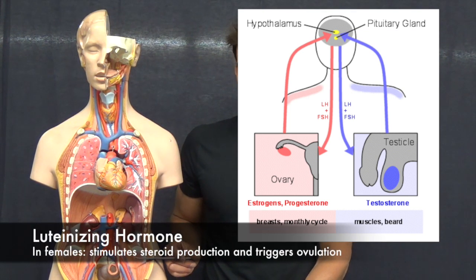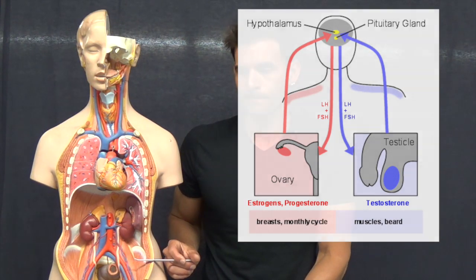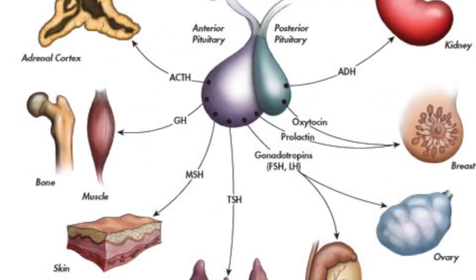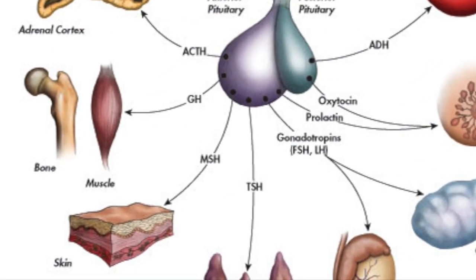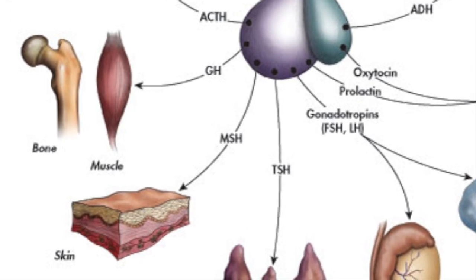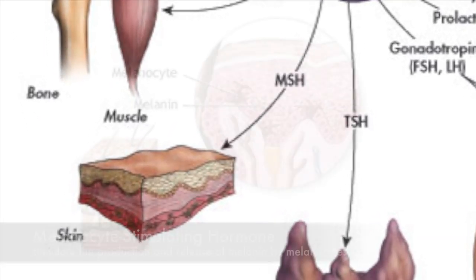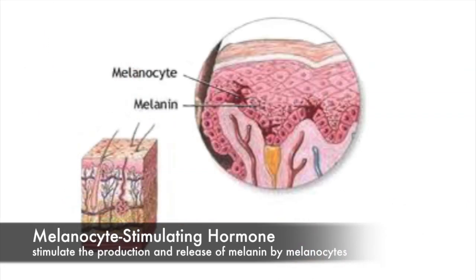In women, luteinizing hormone also stimulates the secretion of progesterone by the ovaries and triggers ovulation. Melanocyte stimulating hormone stimulates melanocytes to secrete melanin, which influences skin pigmentation.